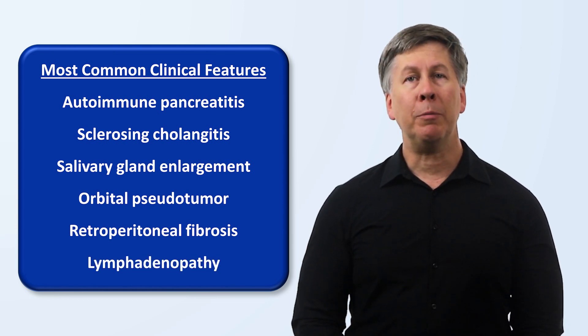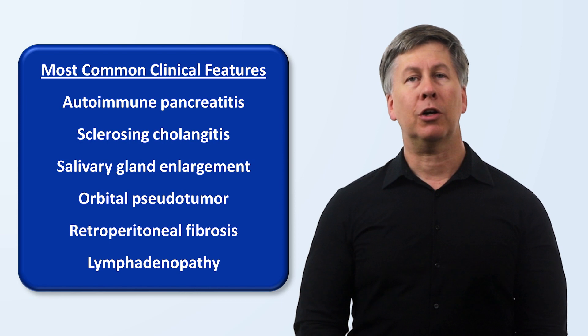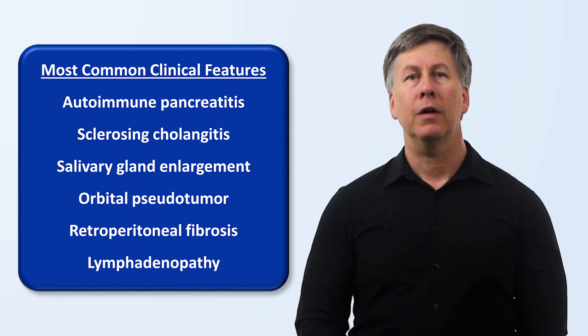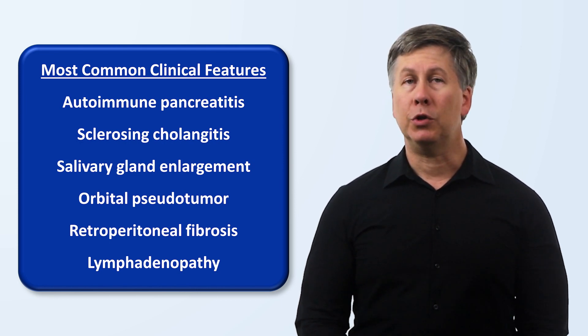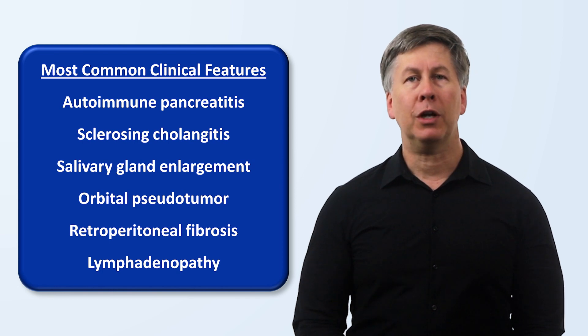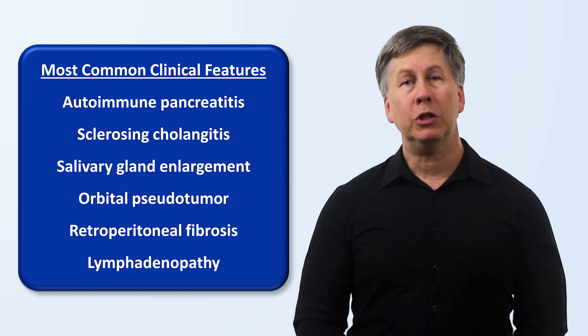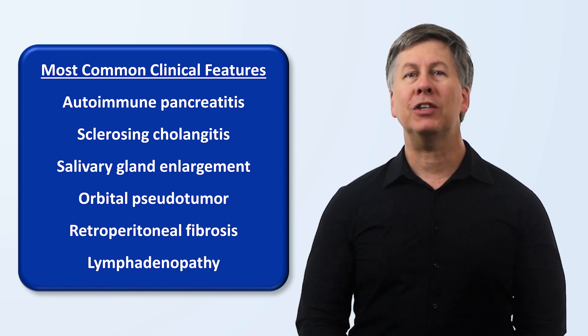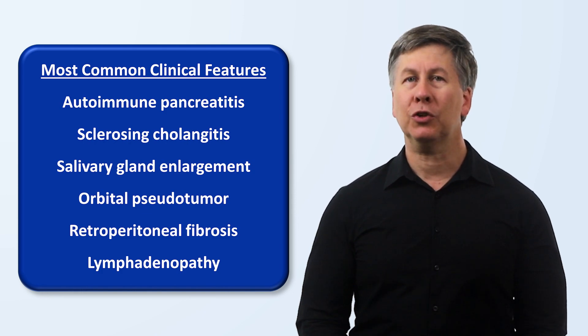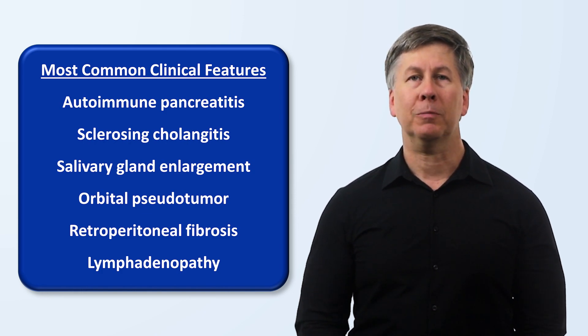Less common but still well-described manifestations include fibrosing thyroiditis, pulmonary inflammatory pseudotumor, interstitial pneumonia, pleuritis, fibrosing mediastinitis, vasculitis, tubulo-interstitial nephritis, and renal failure. Despite the condition being immune-mediated, fever and other signs of systemic inflammation are rare. Weight loss can be seen, but it's typically limited to those with pancreatitis.